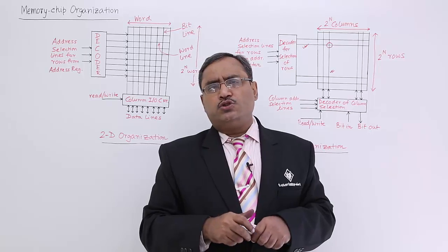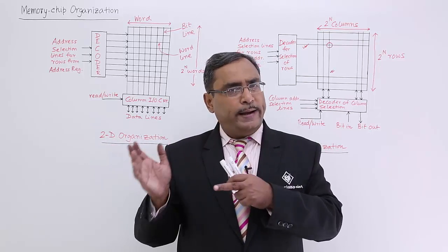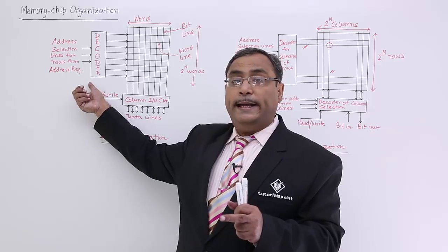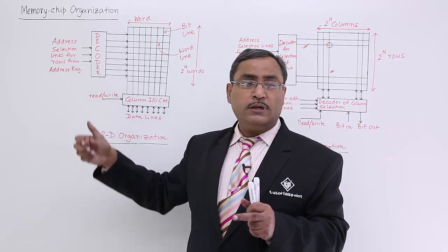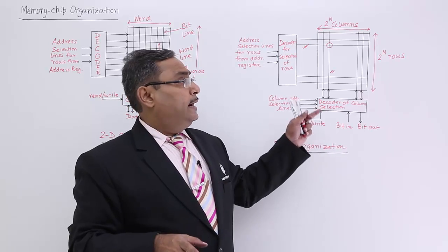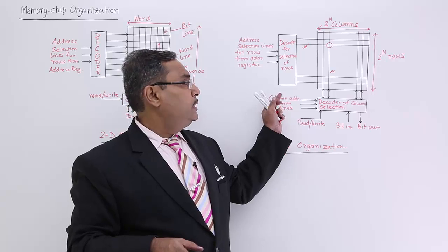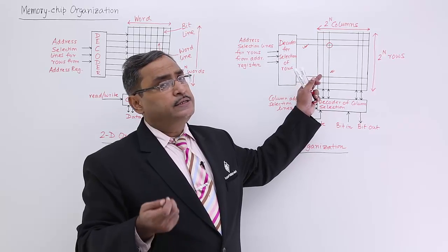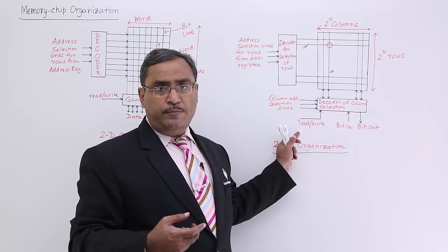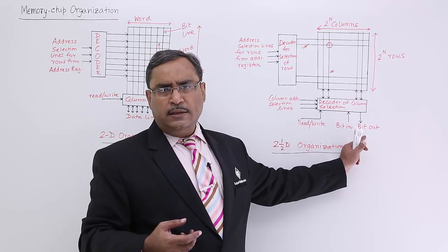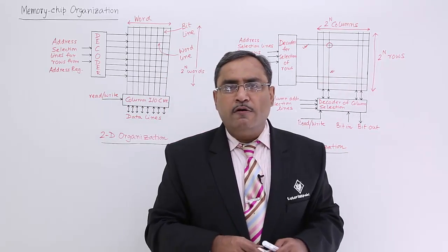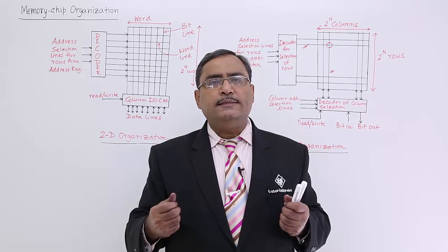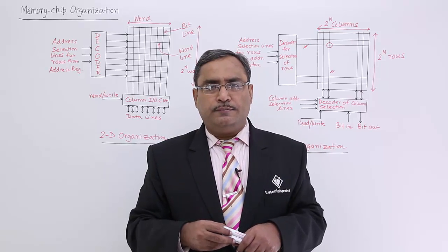This is the memory chip organization. In this session, we discussed 2D and 2 and half D memory organization. In 2D, all address bits go to the row-wise decoder. In 2 and half D, address bits are divided — some to the row-wise decoder, some to the column-wise decoder — and a single cell is selected, providing a single bit in or out depending on the read-write mode. Such circuits work in parallel for multiple-bit word sizes. Draw these circuits in your exam copies if such questions come in future. Thanks for watching.